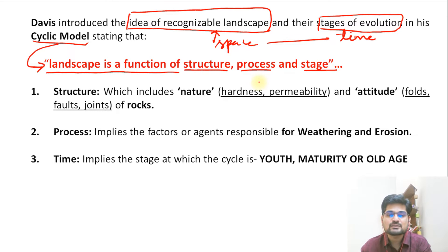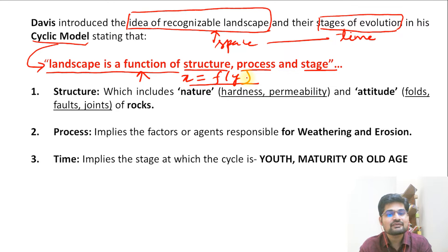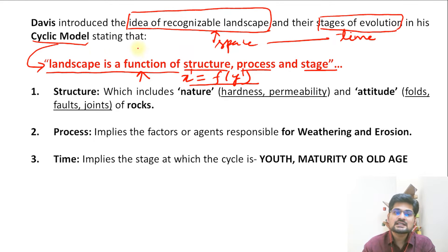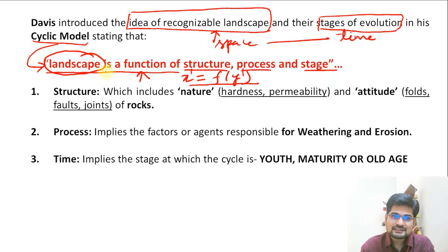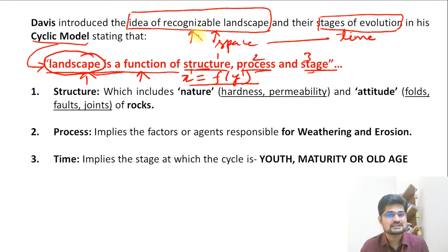When we say landscape is a function of structure, process, and stage, it basically means there is a functional relationship — like x is a function of y, where for every x value there is a corresponding y value. So for every recognizable landscape in a particular stage of evolution, these three important factors are relevant: structure, process, and stage.